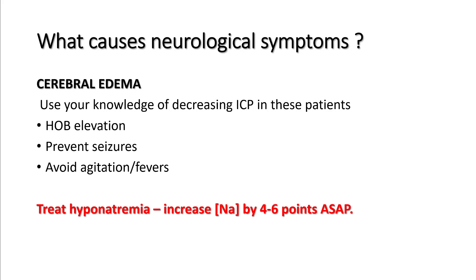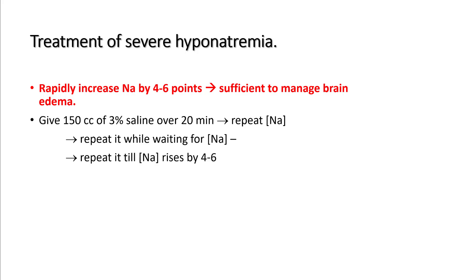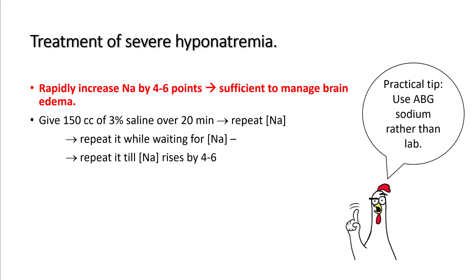Most importantly, try to increase sodium by at least 4 to 6 mEq as soon as possible. Raising sodium by 4 to 6 mEq is usually sufficient to manage brain edema acutely in patients with hyponatremia, and this has been found to be safe. To raise the sodium, give a bolus of 3% saline — 150 cc over 20 minutes — then recheck sodium. Keep bolusing until sodium rises by at least 4 to 6 mEq. An important practical point: use sodium from the ABG machine, as these results are much faster than sending samples to the lab.